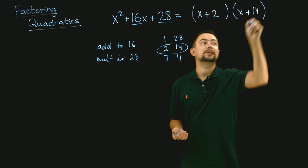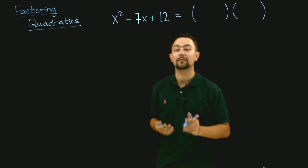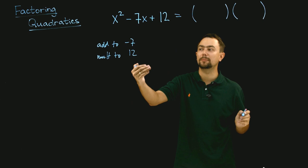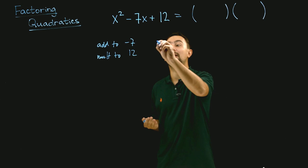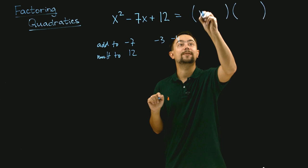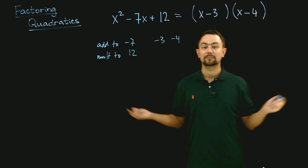In this example we have x squared minus 7x plus 12. Two numbers that add to negative 7 and multiply to 12. We can quite easily guess that the numbers are minus 3 and minus 4, because minus 3 minus 4 is minus 7, and minus 3 times minus 4 is 12. So it factorizes to x minus 3 and x minus 4.